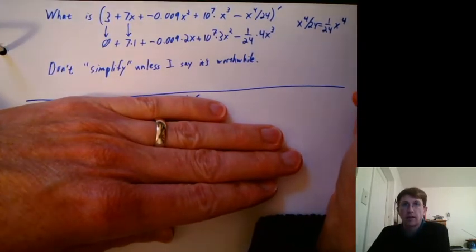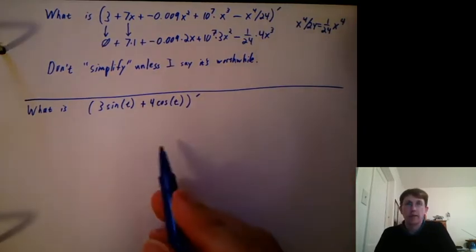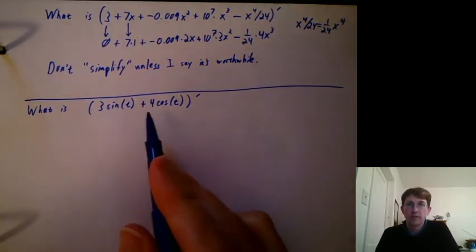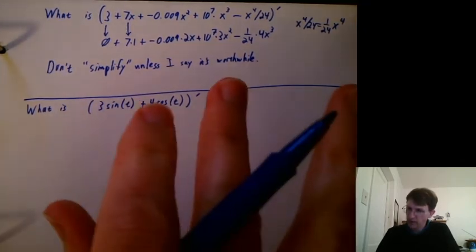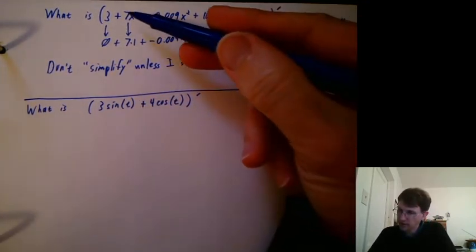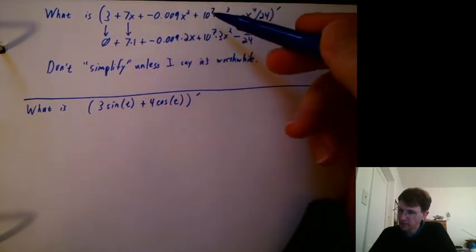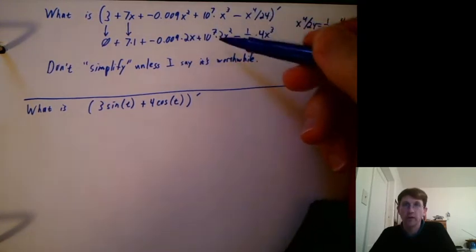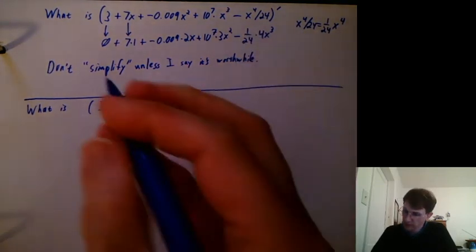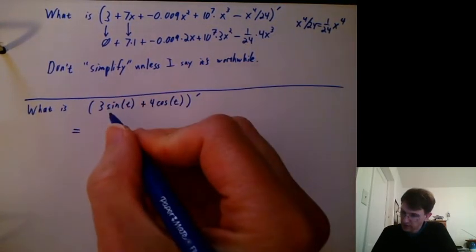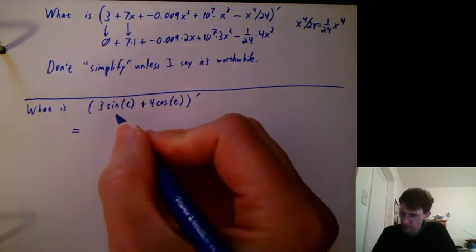Alright. Our next puzzle is what is derivative of 3 sine t plus 4 cosine t. So pause the video, write out your answer. Did you notice here I tried to keep everything in nice neat columns where everything was directly below the term it came from. So I'm going to suggest the same thing here. Alright. Hopefully you paused and wrote out your answer.